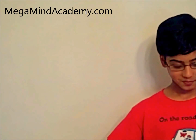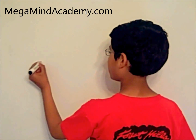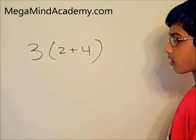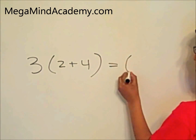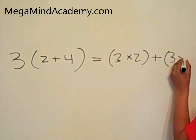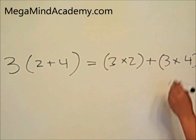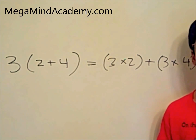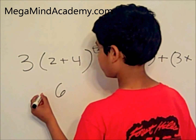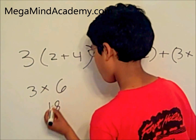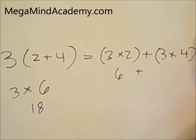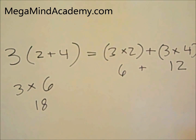Let's look at an example. 3 multiplied by 2 plus 4 is equal to 3 multiplied by 2 plus 3 multiplied by 4. Let's see if we are correct. 2 plus 4 is equal to 6, multiplied by 3 is equal to 18. 3 multiplied by 2 is 6, plus 3 multiplied by 4 is 12. That's 18.